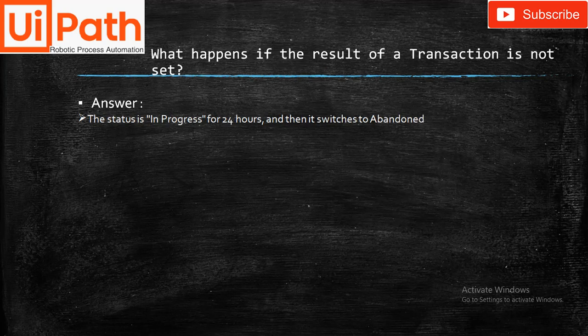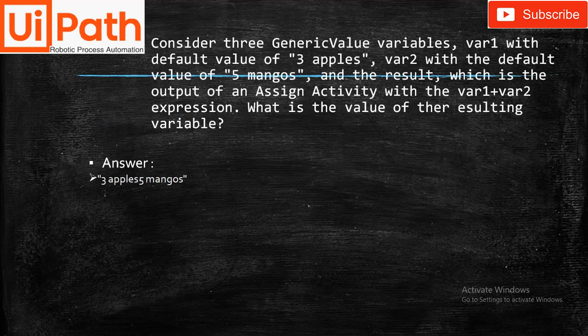What happens if the result of a transaction is not set? Answer: The status remains In Progress for 24 hours and then it is switched to Abandoned.